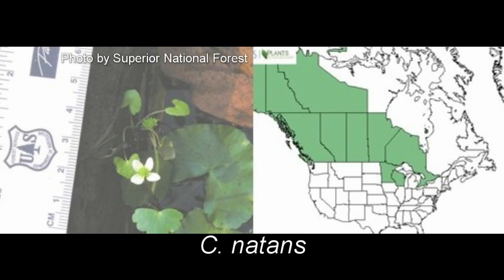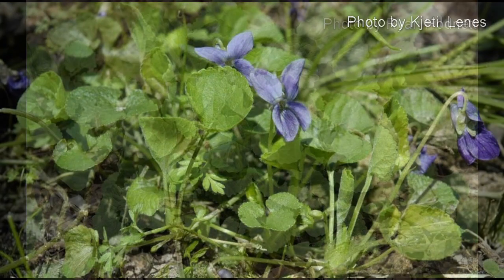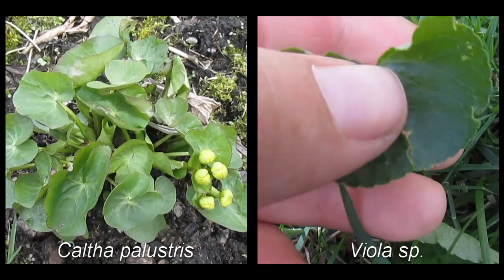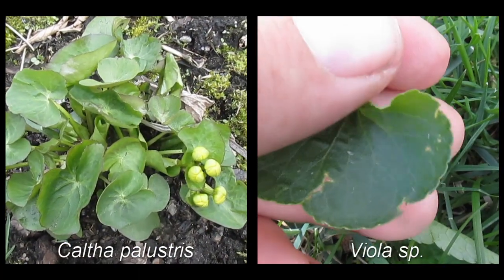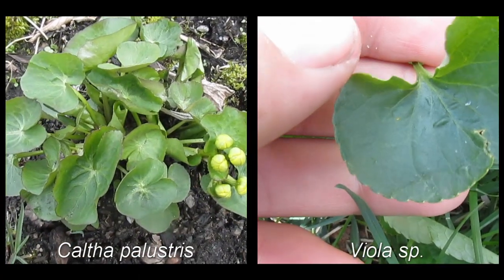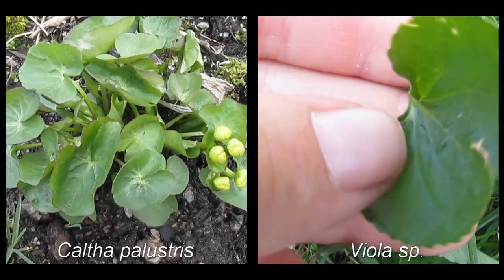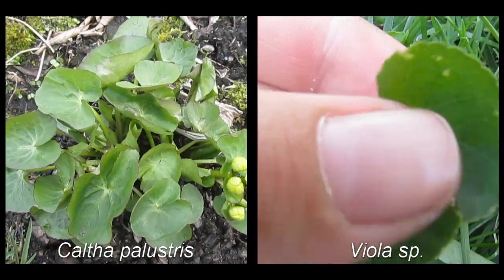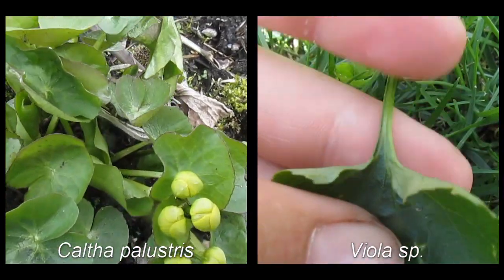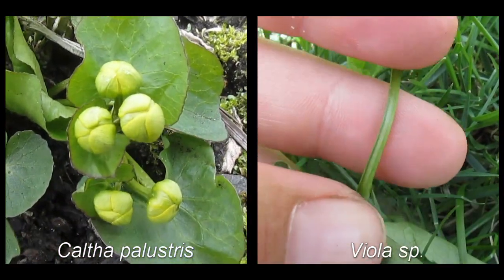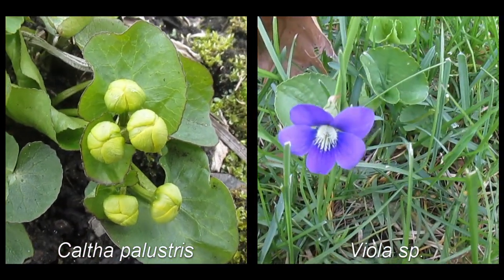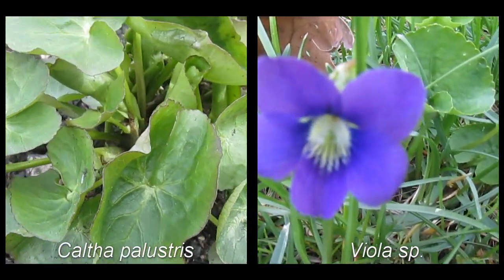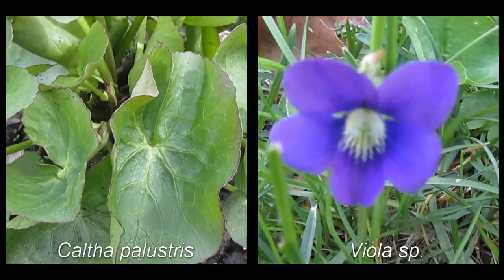Other plants that look similar to marsh marigold are violets, garlic mustard, and creeping charlie. Violets, Viola species, have similar shaped and sized leaves, however they are generally not as thick, do not branch, and have a longer and thinner petiole. Violets typically grow on dry woodland floors unlike marsh marigolds, and the flowers look like violet flowers that come in yellows, whites, and pinks to deep purple colors.